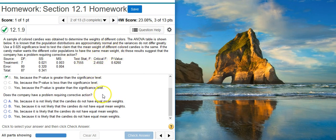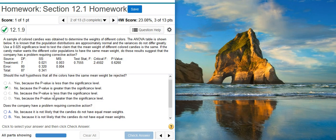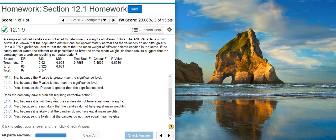That is the null hypothesis - that all of the colors have the same mean weight. We fail to reject the null hypothesis, which means the candies could have the same mean weight. And if it's true, then the candy maker is getting what the candy maker wants, and so therefore there's no problem requiring corrective action.